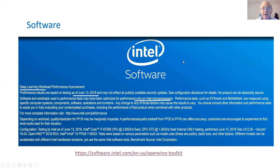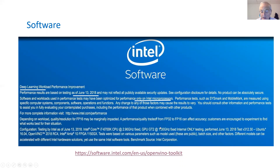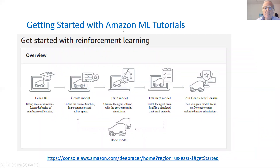In the future, competition will increase and it may become open source. Getting started with the free tool, you click on the icon and it leads you to webinars, how-to guides, and help sessions. Getting started with Amazon machine learning tutorials, and particularly with reinforcement learning used in this mechatronic device — the race car — the process is to learn the reinforcement learning model, create it, train it, and then evaluate it, and then clone the model.